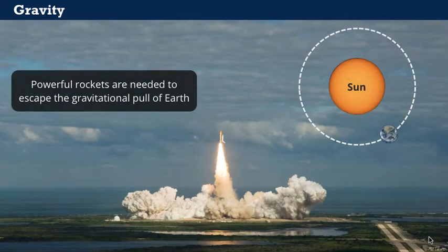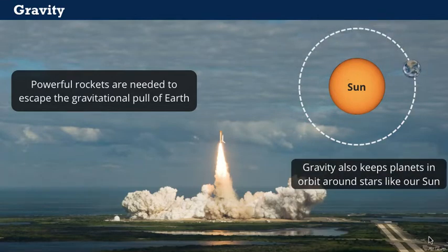To overcome this force, we need powerful rockets that can escape the pull of Earth's gravity. Similar to how the Earth holds us in place, the Sun holds the Earth and other bodies in orbit to create our solar system. The ability of the Sun to hold the planets in orbit is due to its large gravitational force.